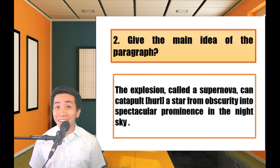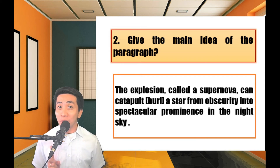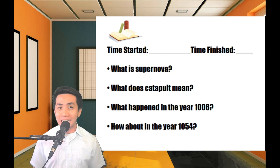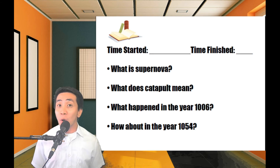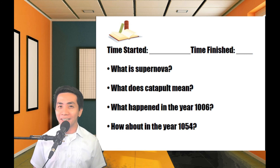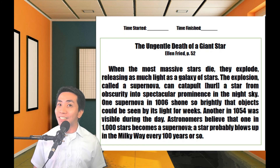Let's try another reading strategy to understand the given paragraph. Do not read the paragraph word by word — focus only on the specific information being asked. This activity can be found in your Module 7, page 14. Here are the questions: First, what is supernova? Second, what does catapult mean? Third, what happened in the year 1006? And last, how about in the year 1054? Your 30 seconds start now.